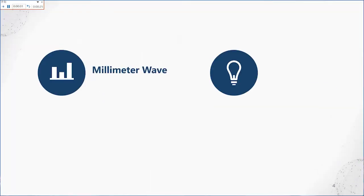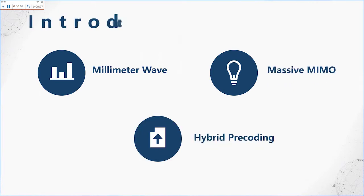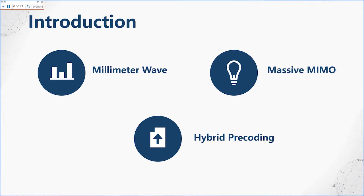Massive MIMO technology and millimeter wave systems, as the key technologies of the new generation of mobile communications, can effectively increase channel capacity and relieve spectral resources. Furthermore, the use of hybrid precoding technology can improve system performance and reduce system hardware complexity.